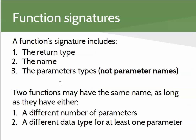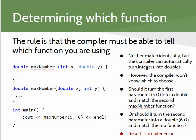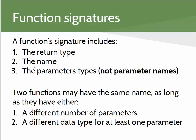There are examples where this doesn't work and we have to be more careful. The bottom line is that the compiler must be able to tell what function you're using. If it differs in the number of parameters or in the data type of at least one parameter, it will probably be able to determine the difference — but that's not guaranteed.